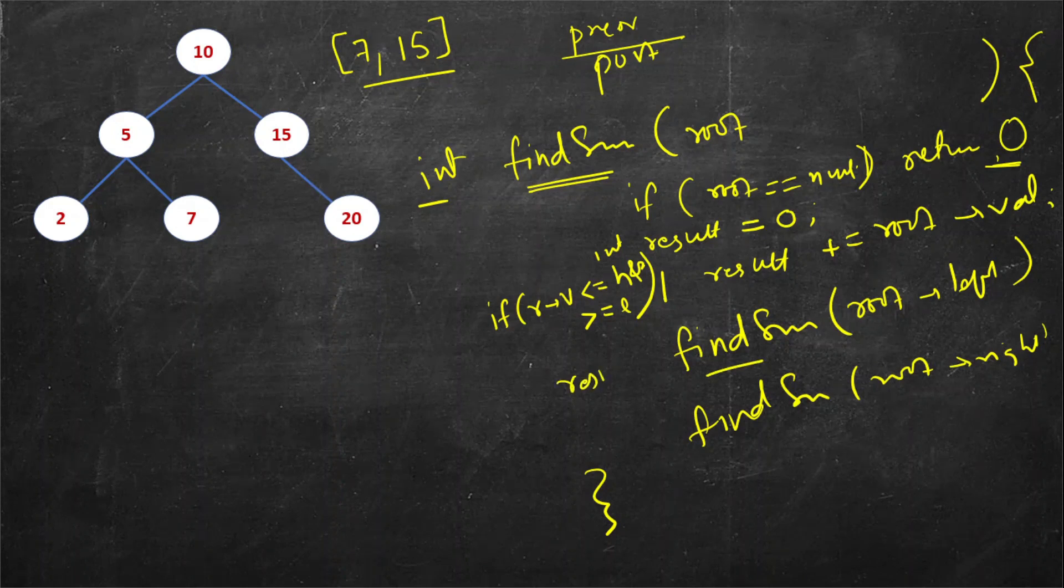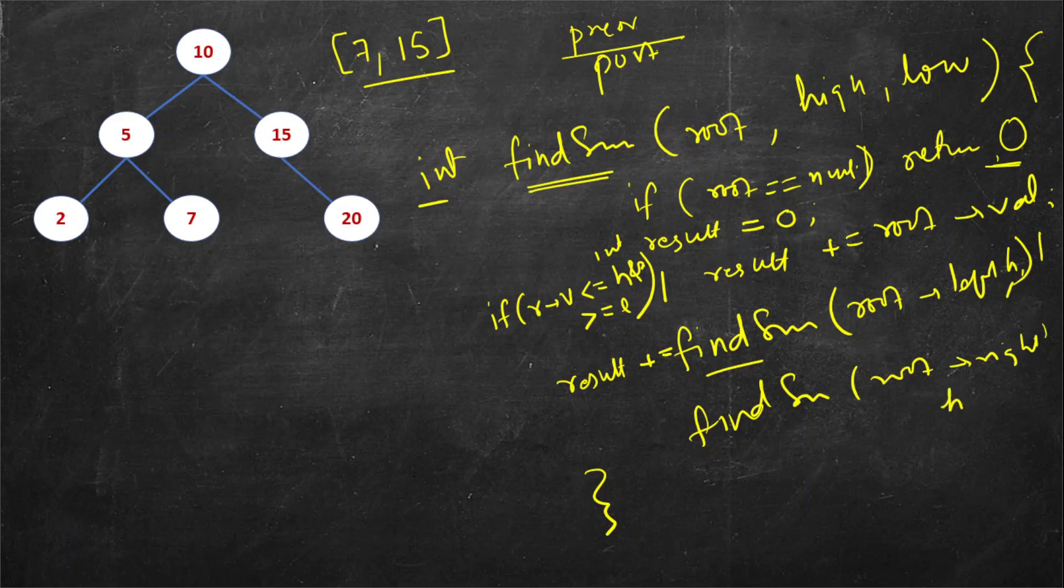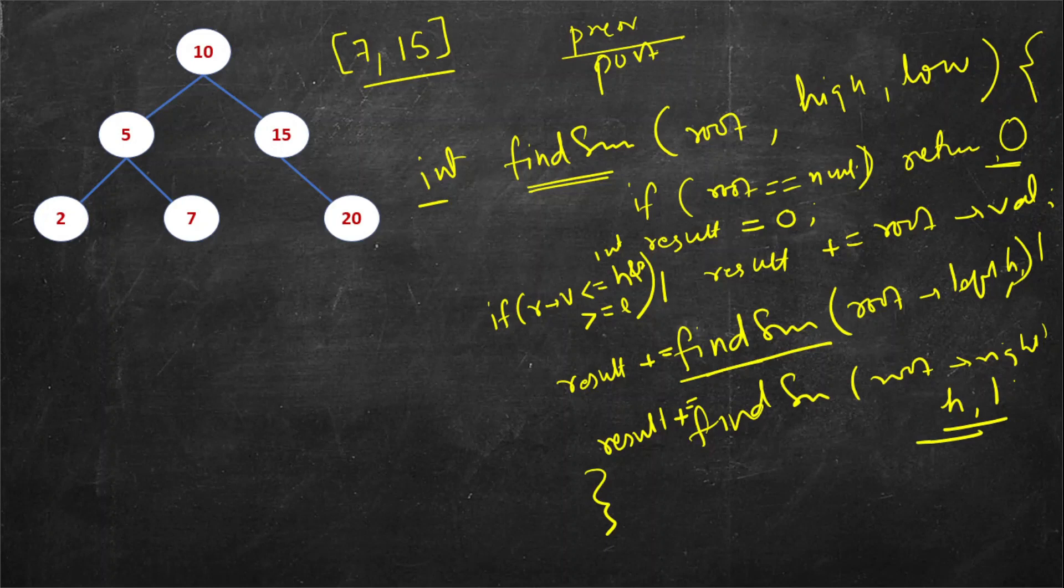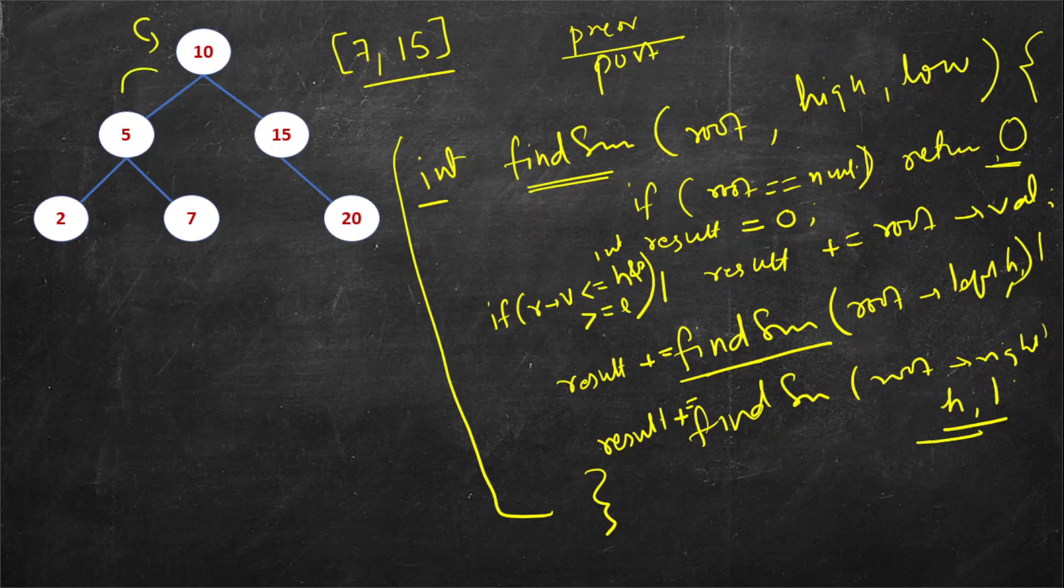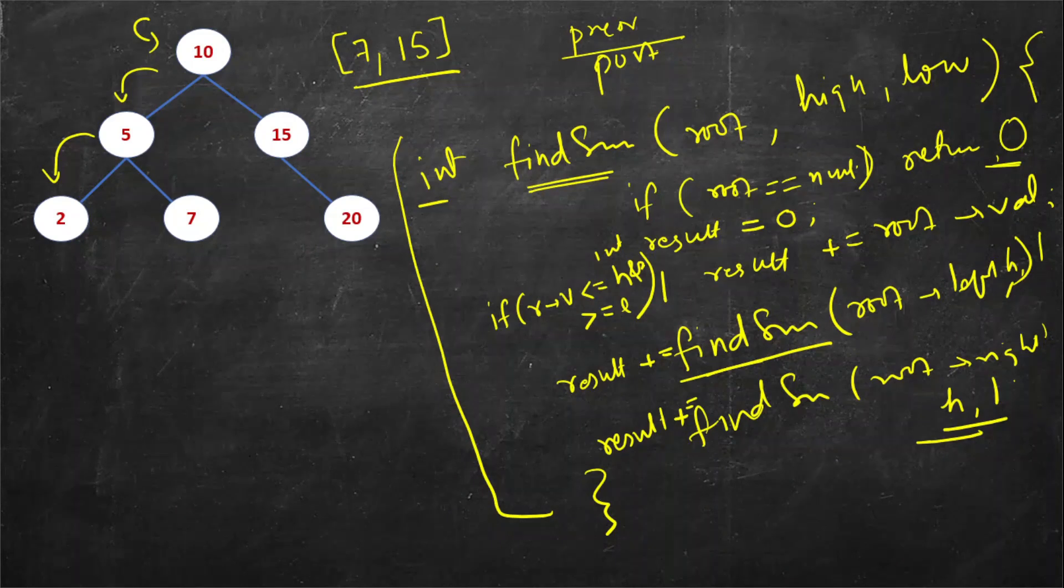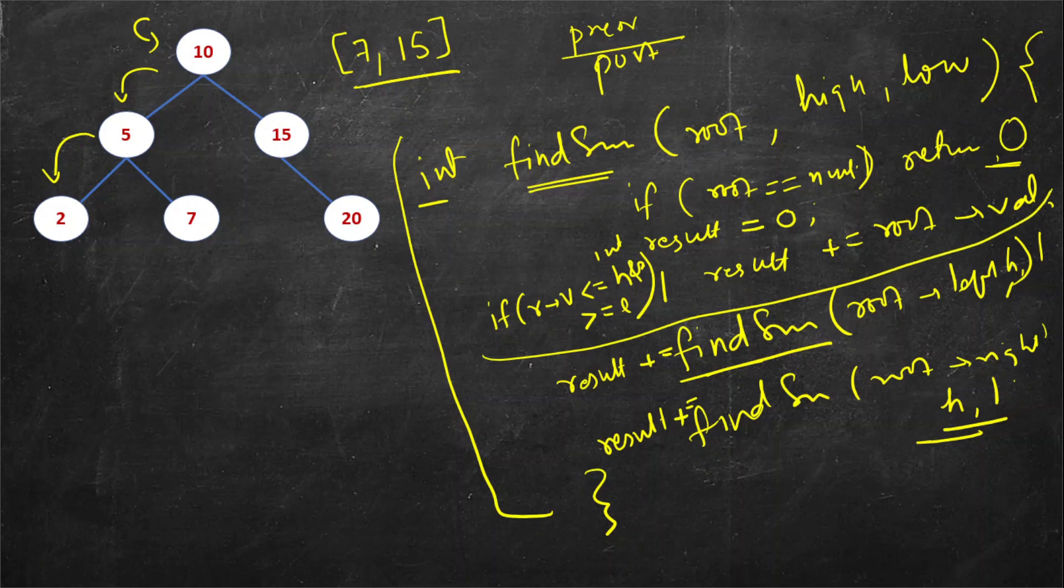Next, result plus equal to find sum root left and here there are extra parameters high and low which will remain same in all the calls. Result plus equal to find sum right subtree. So very simple: if you write any traversal code you reach a given node and then from there you reach all the other child nodes. Instead of just printing the value you check whether that lies in this range then add it to result. If it doesn't lie in that range this line will not be executed and it will not be added to result.